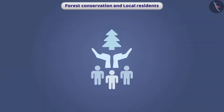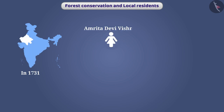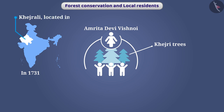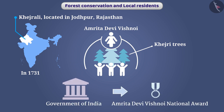Local residents are trying to conserve forests as per their tradition. In 1731, Amrita Devi Bishnoi, along with 363 people from the village, sacrificed themselves to save Khejri trees in the village of Khejrali, located in Jodhpur, Rajasthan. The Government of India has instituted the Amrita Devi Bishnoi National Award for Conservation of Animals.